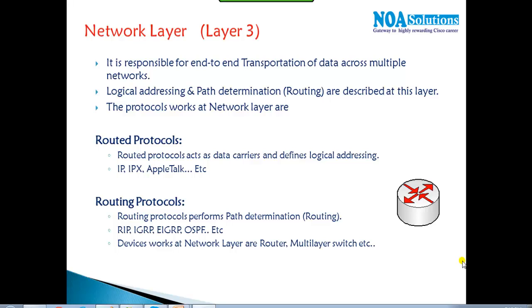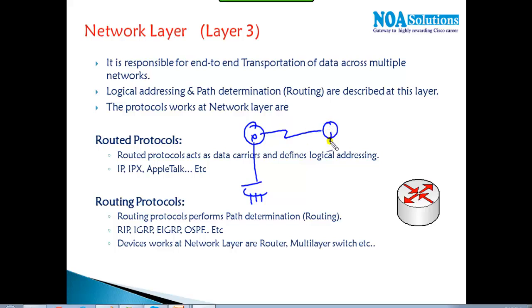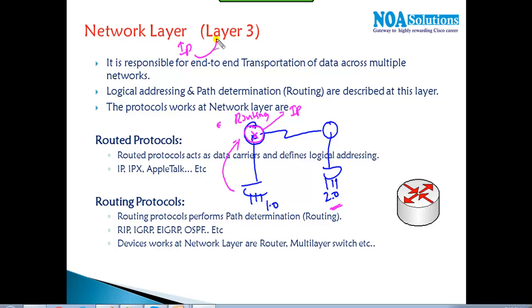After the transport layer comes the network layer. Network layer, data link layer, and physical layer are all hardware layers because specific hardware devices are involved. The network layer works completely based on IP addresses and is responsible for end-to-end transmission of data. For example, a user on network 192.168.1.x wanting to communicate with another network sends a packet to the router, which performs routing — that is the network layer's job. The router identifies the destination based on the destination IP address, which is why we call IP addresses Layer 3 addresses.